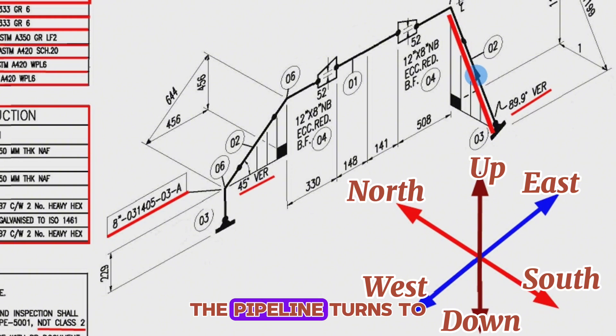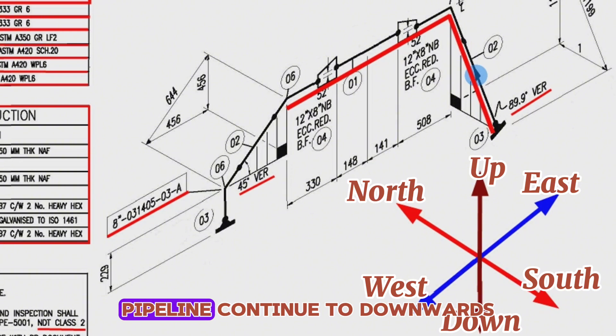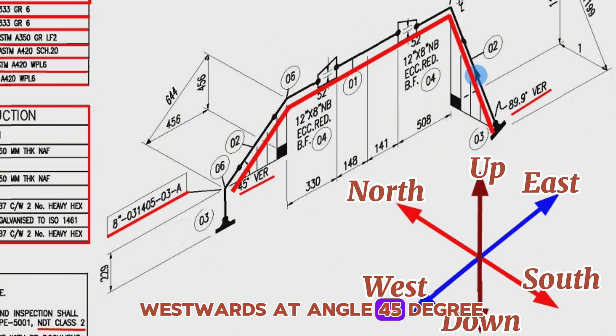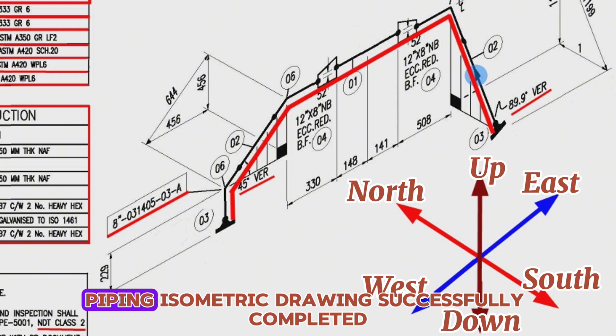In this point, the pipeline turns to westwards with a 90-degree elbow. The pipeline continues downwards, then turns to the westwards at angle 45 degrees. At last, the pipeline continues downwards with a 45-degree elbow. And reading piping isometric drawing successfully completed.